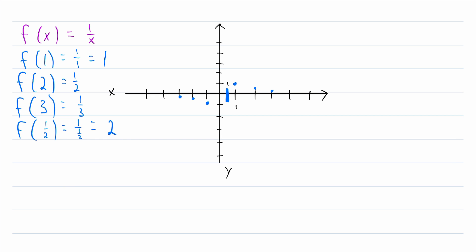So f of 1 half is equal to 2. So let's plot that, x equals 1 half, y equals 2. Again, if we had input negative 1 half, we would get an output of negative 2. So we'll plot that point as well. Negative 1 half, negative 2.